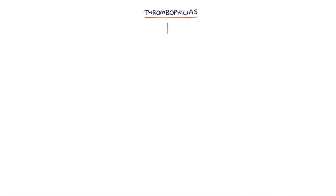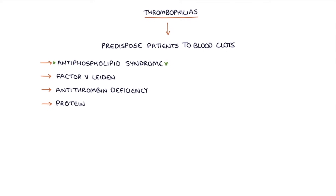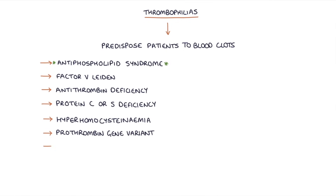Let's talk about thrombophilias. Thrombophilias are conditions that predispose patients to developing blood clots. There are a large number of these, including antiphospholipid syndrome, which is probably the one to remember, factor V Leiden, antithrombin deficiency, protein C or S deficiency, hyperhomocystinemia, prothrombin gene variant, and activated protein C resistance.